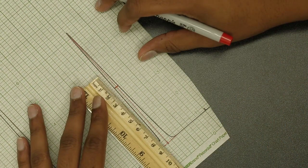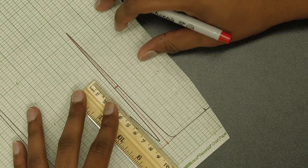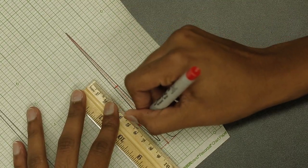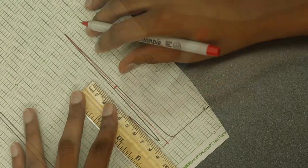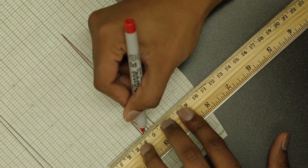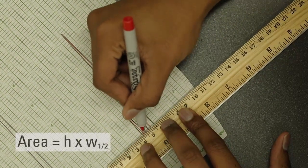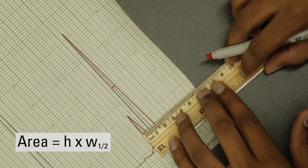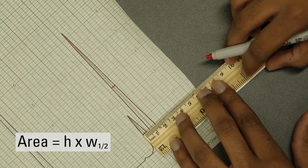Now let's do the same thing for the smaller peak. To calculate the area, measure the height of the peak from the baseline and measure the width of the peak at half height. The area of the triangle is equal to the product of the height times the width at half height.